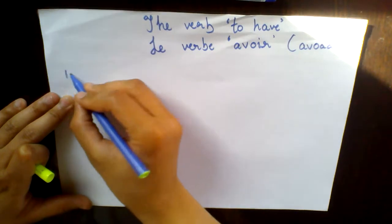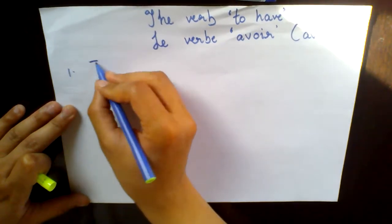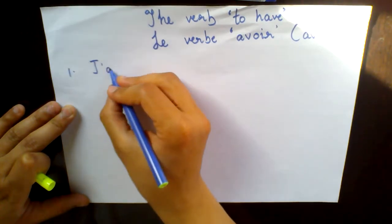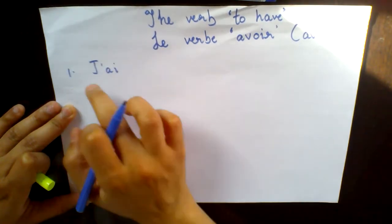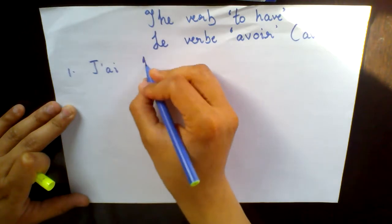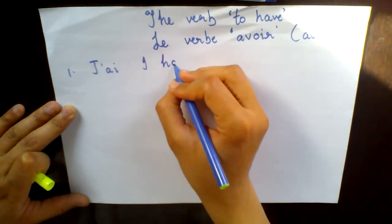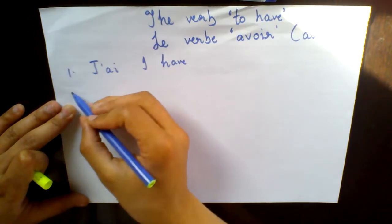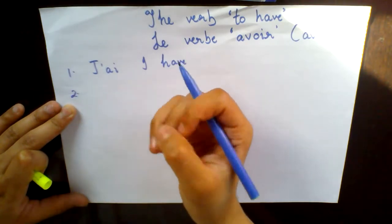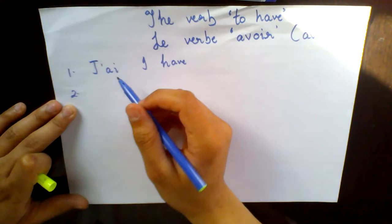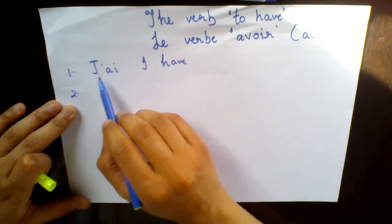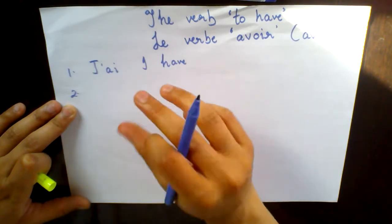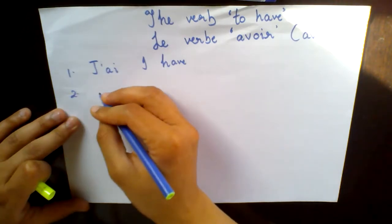Now the first conjugation we have is J. Remember we say J for I. So this means 'I have'. However, we do not pronounce the last letter because in French they do not find it beautiful to pronounce. So instead of saying J-AI fully, they just say J'ai — J with the A sound.